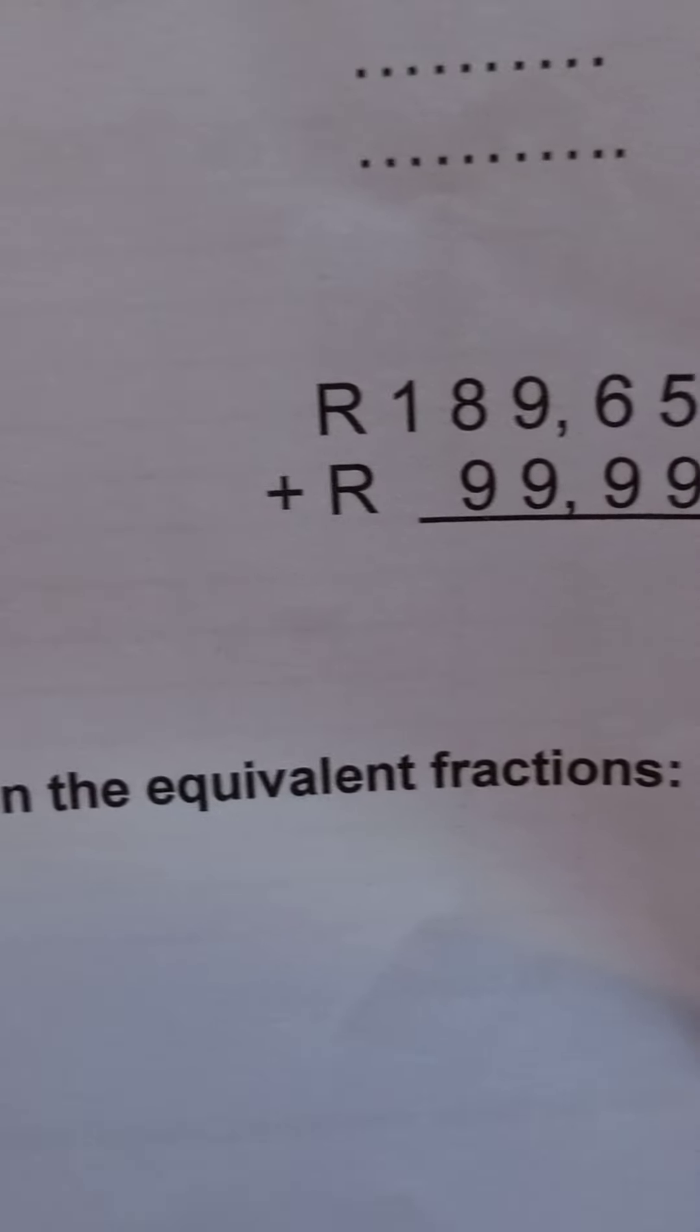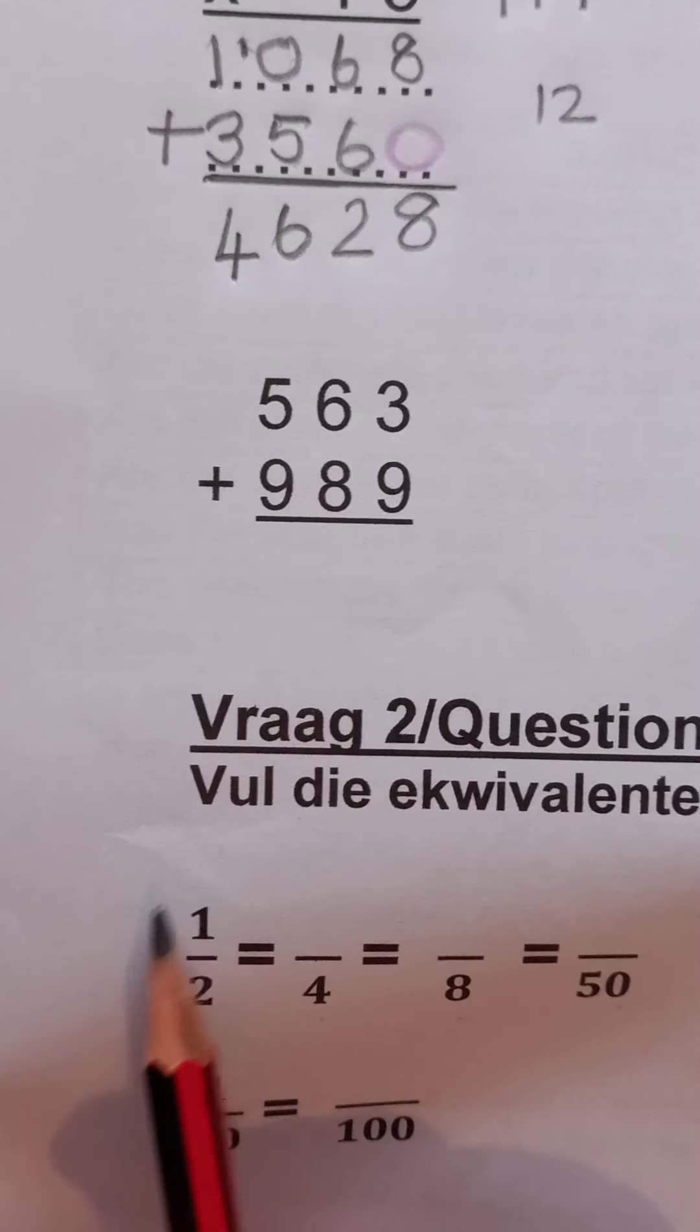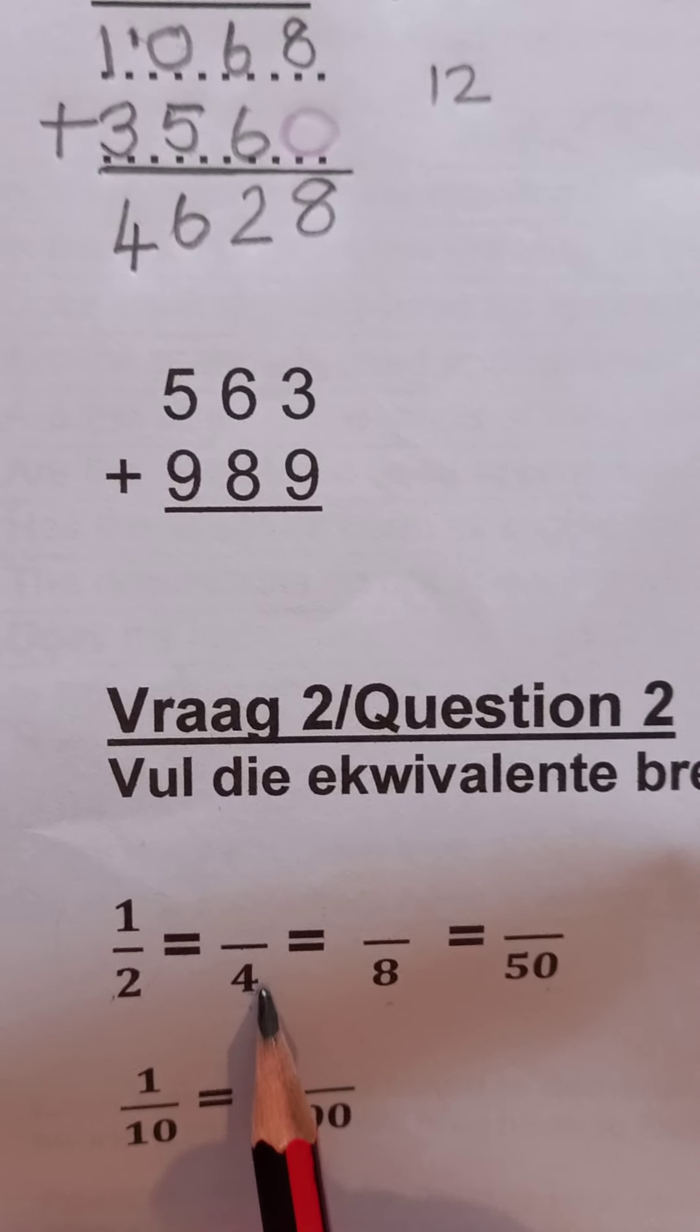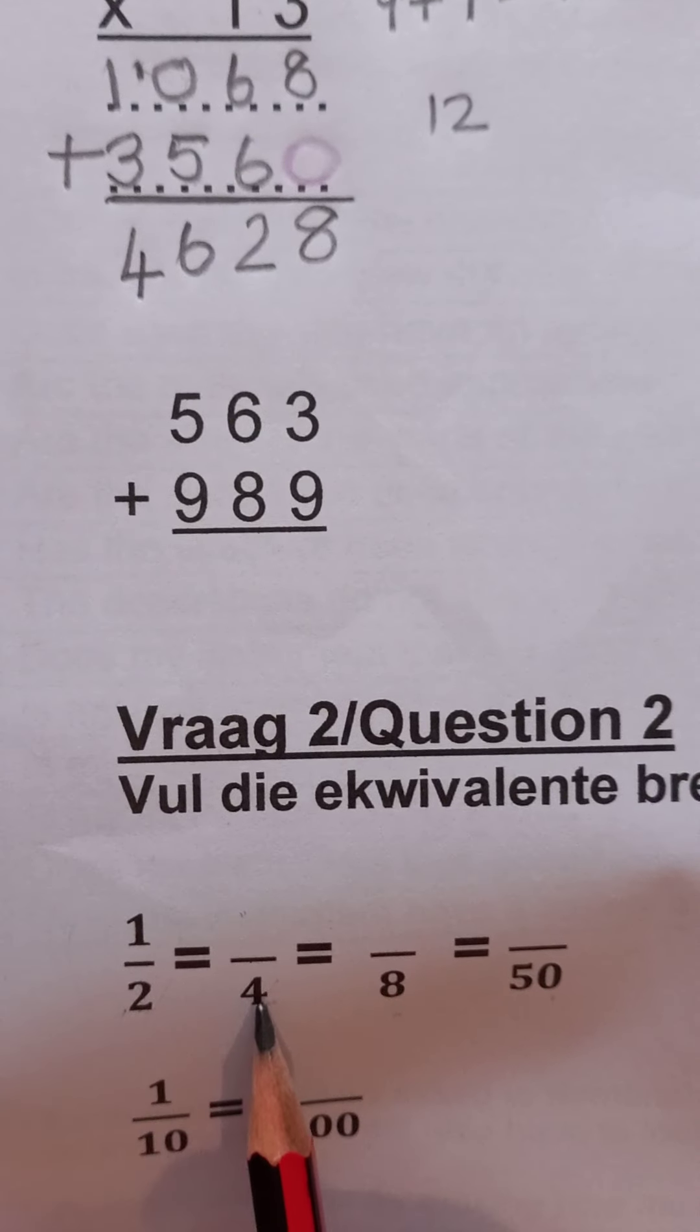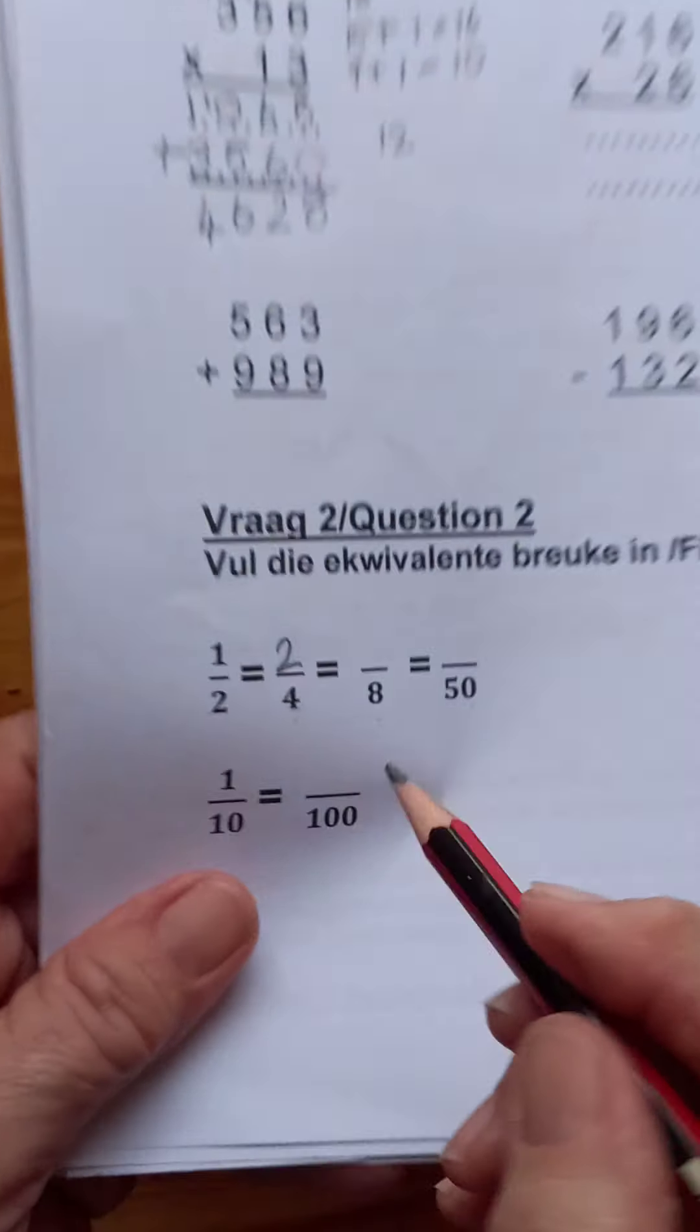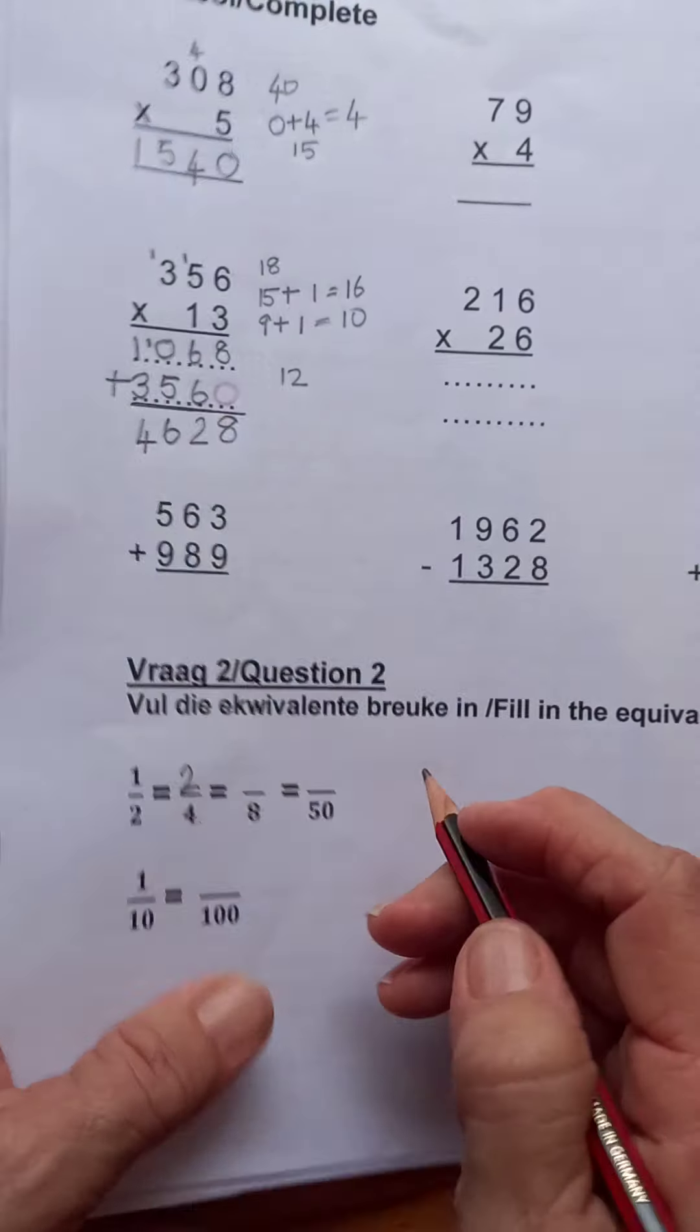Fill in the equivalent fractions. So if you look at a half and quarters and eighths and fiftieths, if this is a half and the denominator is four, what must be on top? If one is half of two, what is half of four? Two quarters. What will be half of eight? Then four.